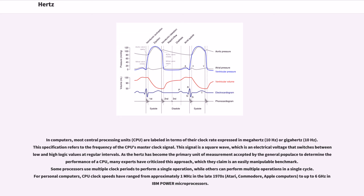In computers, most central processing units (CPU) are labeled in terms of their clock rate expressed in megahertz (10⁶ Hz) or gigahertz (10⁹ Hz). This specification refers to the frequency of the CPU's master clock signal. This signal is a square wave, which is an electrical voltage that switches between low and high logic values at regular intervals. As the hertz has become the primary unit of measurement accepted by the general populace to determine the performance of a CPU, many experts have criticized this approach, which they claim is an easily manipulable benchmark. Some processors use multiple clock periods to perform a single operation, while others can perform multiple operations in a single cycle. For personal computers, CPU clock speeds have ranged from approximately 1 megahertz in the late 1970s (Atari, Commodore, Apple computers) to up to 6 gigahertz in IBM Power microprocessors.